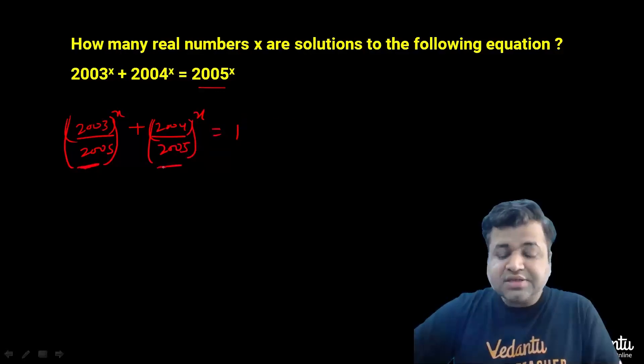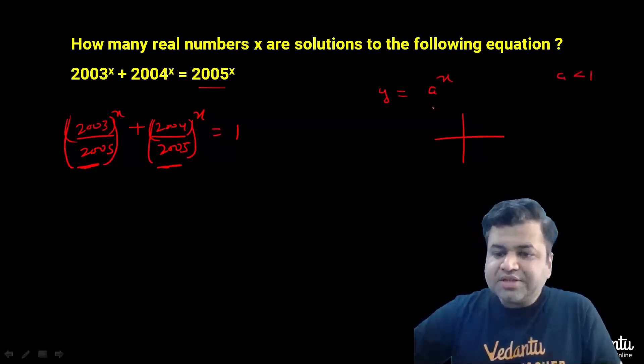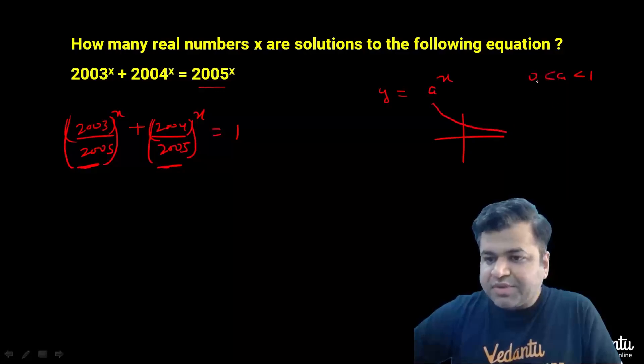Clearly both fractions are less than 1. Now consider the graph of y equals a^x. If a is less than 1 but greater than 0, this graph is clearly decreasing.